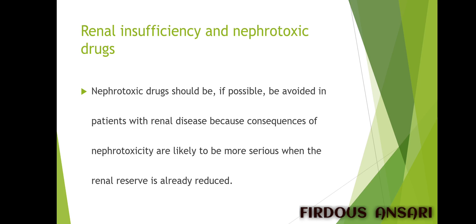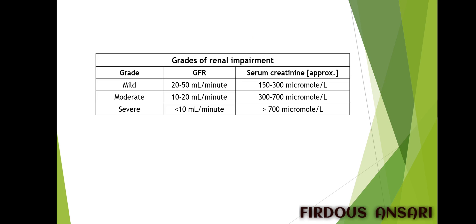Nephrotoxic drugs should, if possible, be avoided in patients with renal disease because the consequences of nephrotoxicity are likely to be more serious when the renal reserve is already reduced. All the organs of our body are interconnected — if a person has kidney failure or kidney impairment, there are chances that the liver may also get damaged. It is therefore better to avoid nephrotoxic drugs in patients with renal impairment.